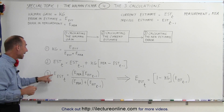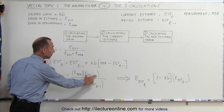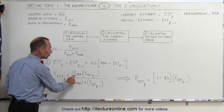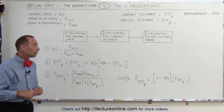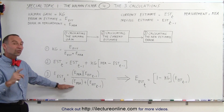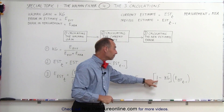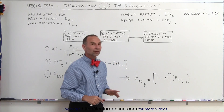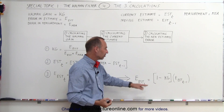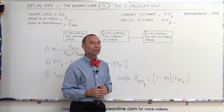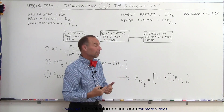Finally, we recalculate the error in the estimate. The equation takes the previous error in the estimate, multiplies it by the error of the measurement, and divides by the sum of the error in the measurement plus the previously calculated error of the estimate. The equation is often also written as: the new error in the estimate equals 1 minus the Kalman gain, times the previous error. When working with matrices, the 1 becomes the identity matrix, but for a single value it is simply 1 minus the Kalman gain. So the factor we multiply the previous error by is really the inverse of the size of the Kalman gain.